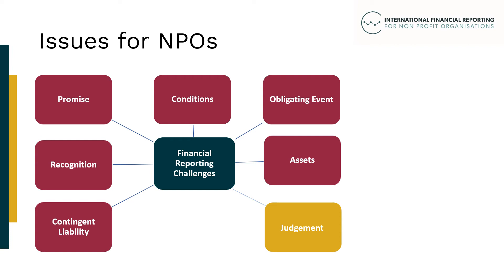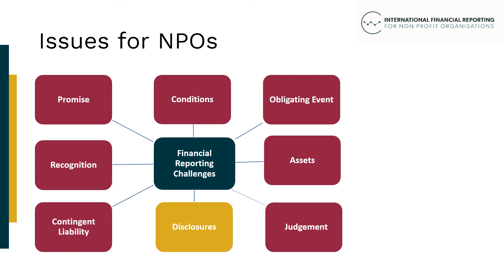Where arrangements are documented in a grant agreement, recognition decisions may be easier, but where no grant agreement exists to explain complex relationships, this may be more challenging. Disclosure about commitments not yet reflected in the accounts is important, particularly for NPOs that make significant grants. It can provide information that helps the understanding of future fundraising needs or commitments over existing reserves. Consideration needs to be given to how grants are presented in the statement of financial performance and how this will help stakeholders. There is a separate webcast on the classification of expenses.